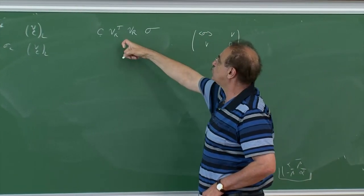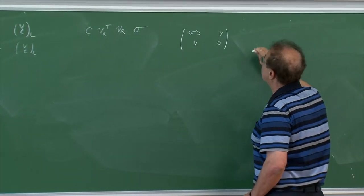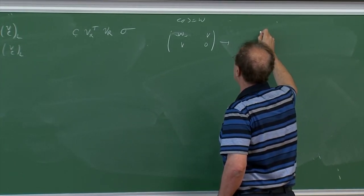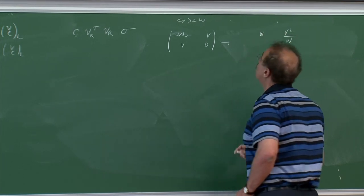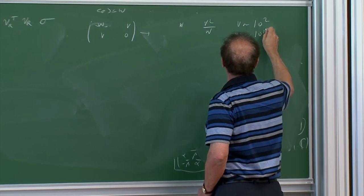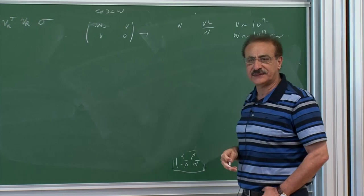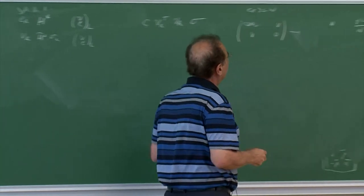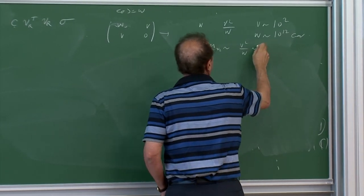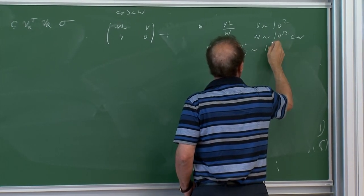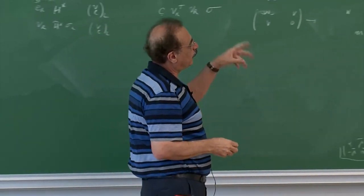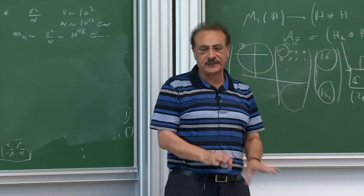With v of order 10² GeV and σ (called w here) of order 10¹¹–10¹² GeV, the mass of the left-handed neutrino is m_{ν_L} ≈ v²/w ∼ 10⁴/10¹² = 10⁻⁸–10⁻⁹ eV — a few eV at most. One can easily arrange it to be 10⁻² eV without any problem.